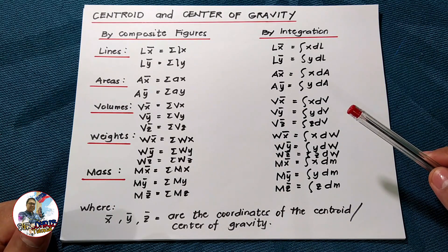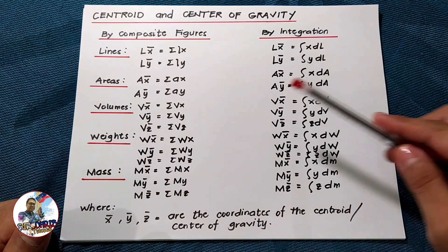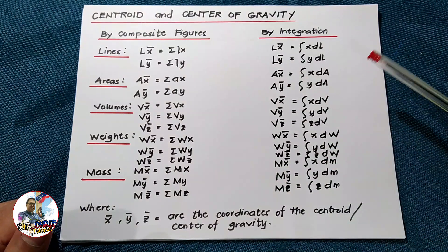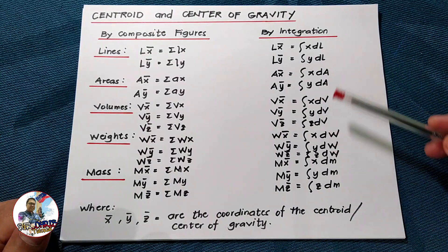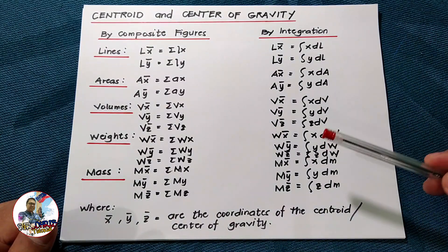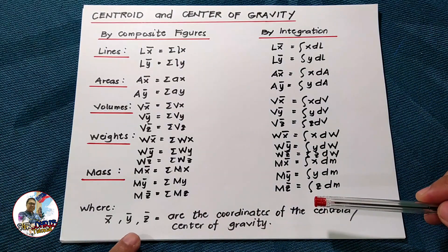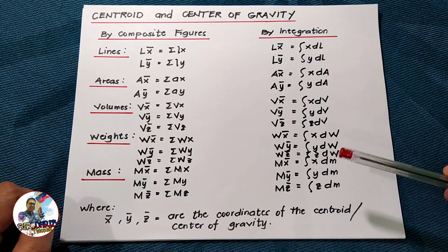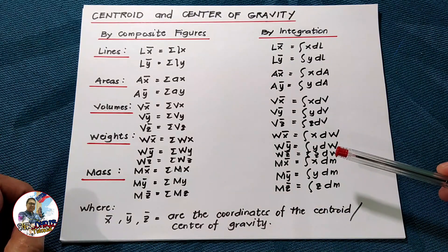Problems of this topic can be solved in two ways: first by integration, and secondly by composite figures. Recall the following formula. Take note that x̄, ȳ, and z̄ are the coordinates of the centroid or the center of gravity.